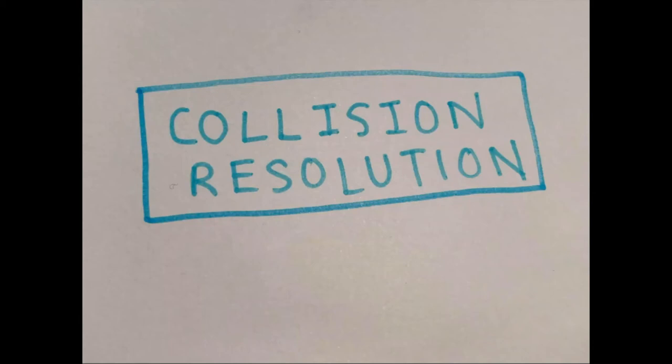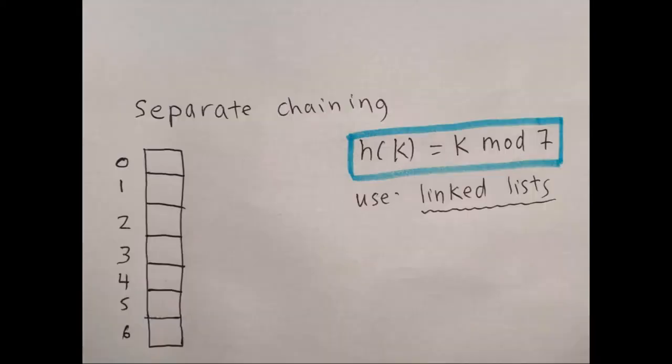Welcome to an introduction to collision resolution. We're going to be talking about three different methods of resolving collisions. Collisions occur when you have a hash function and you input a key into the hash function and it gives you an index that has already been occupied by another key-value pair.